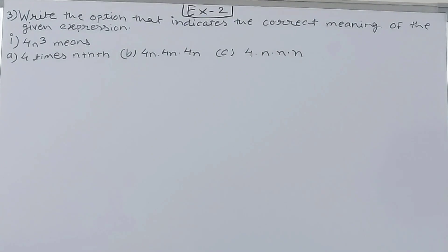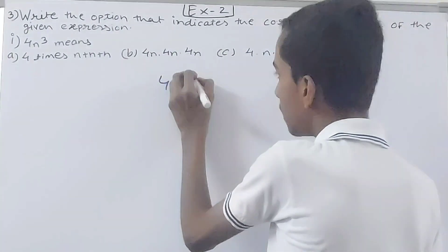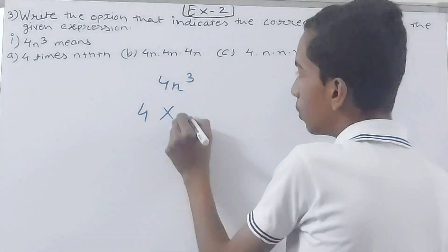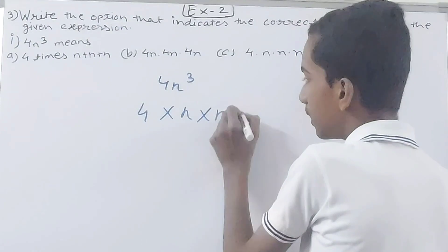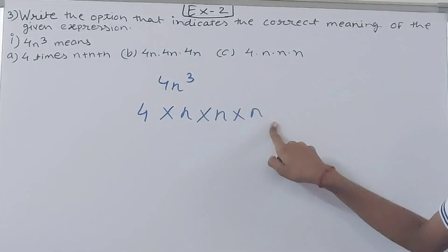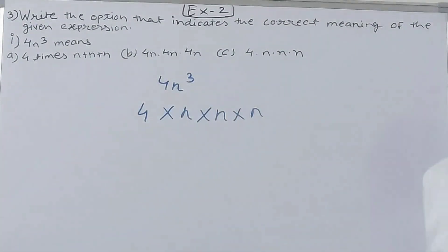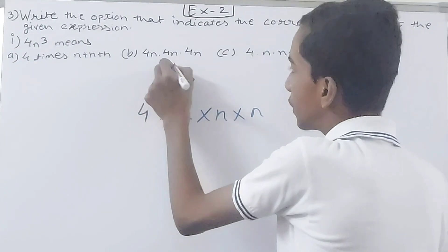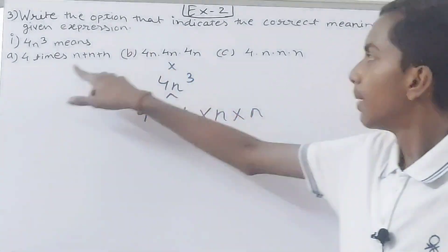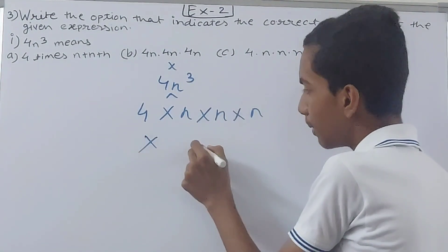First is: what does 4n³ mean? So we have 4n³. The 4 will be as it is, and n³ means n into n into n. Since there is no sign between 4 and n³, that means we have to do multiplication — so 4 into n into n into n.